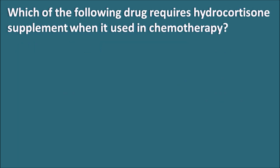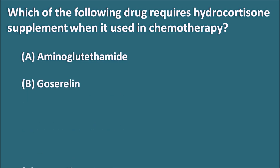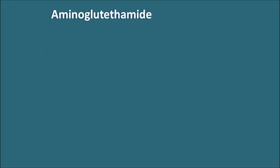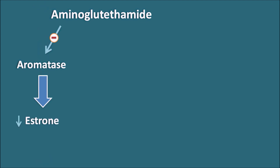Next question: Which drug requires hydrocortisone supplementation when used in chemotherapy? Options: A. aminoglutethimide, B. goserelin, C. tamoxifen, D. anastrozole. The correct answer is aminoglutethimide. Aminoglutethimide inhibits the aromatase enzyme, thereby inhibiting estrone and estradiol synthesis in post-menopausal women. At the same time, it inhibits adrenal hormone synthesis and reduces cortisol levels.